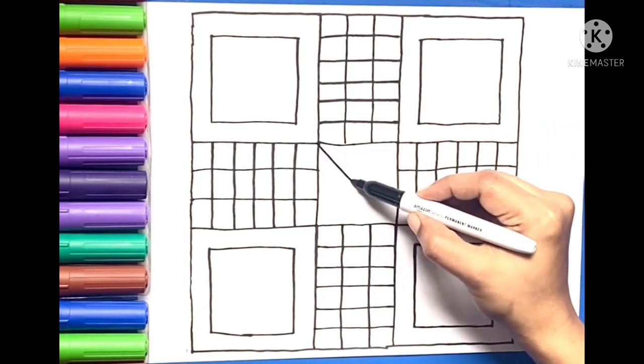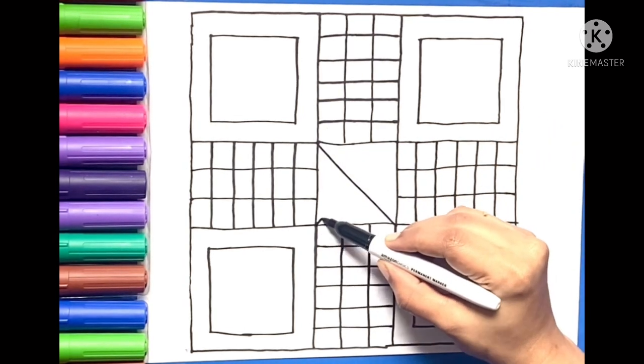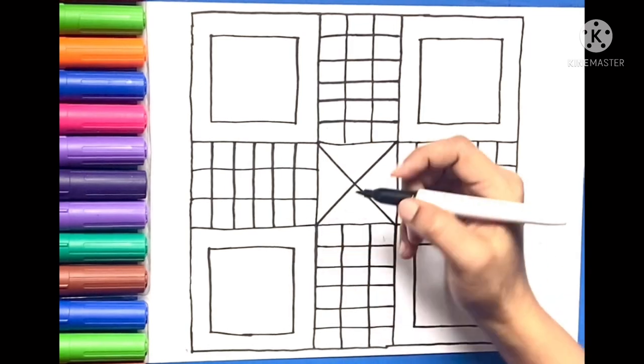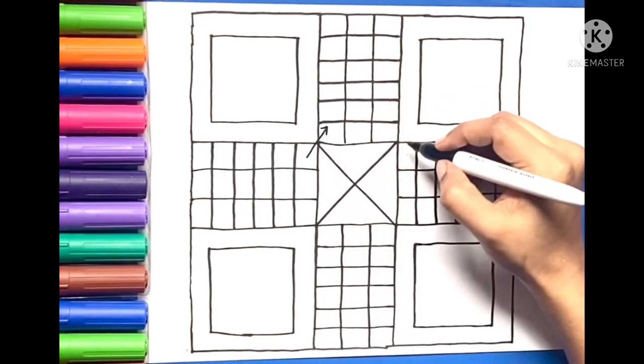Draw cross lines inside the middle square. Now arrow lines on each corner of the big square.